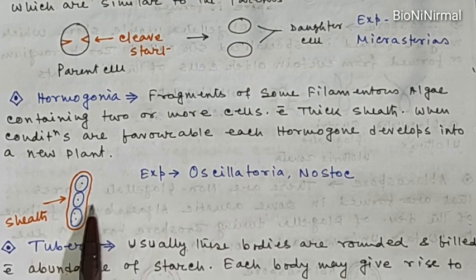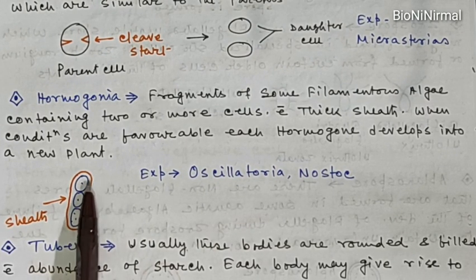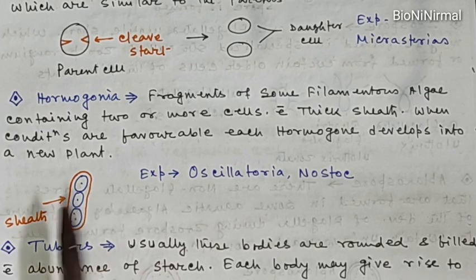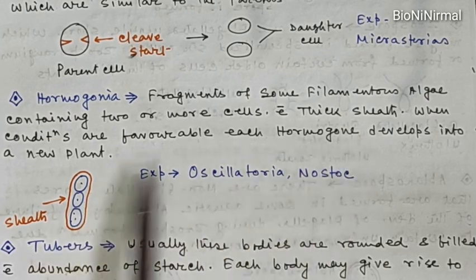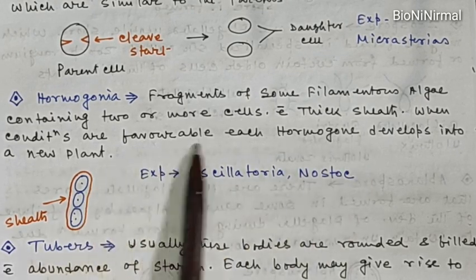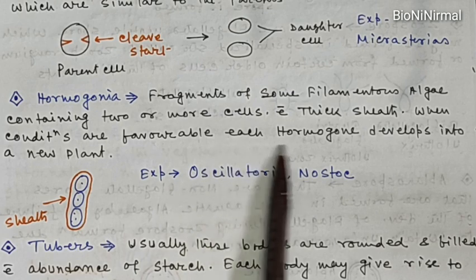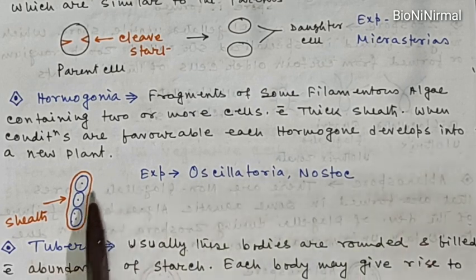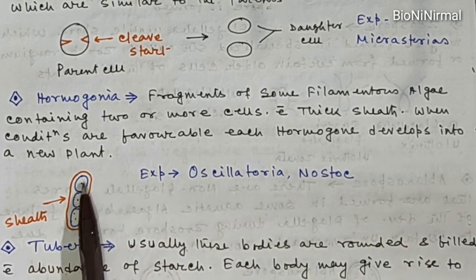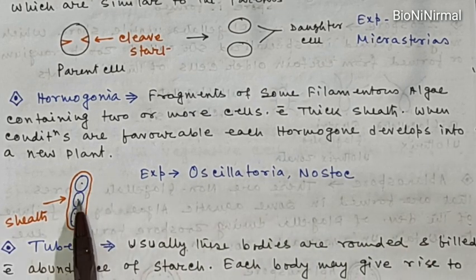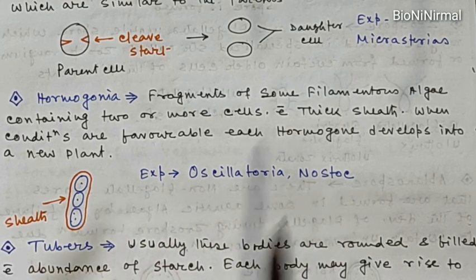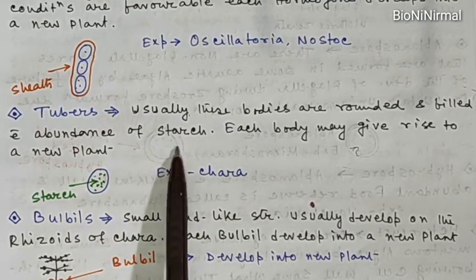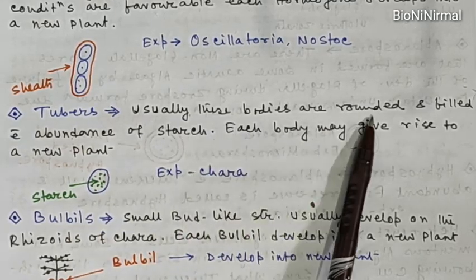Next is hormogonia. Hormogonia are fragments of some filamentous algae containing two or more cells covered by a sheath. When conditions are favorable, each hormogonia develops into a new plant. Examples: Oscillatoria and Nostoc.